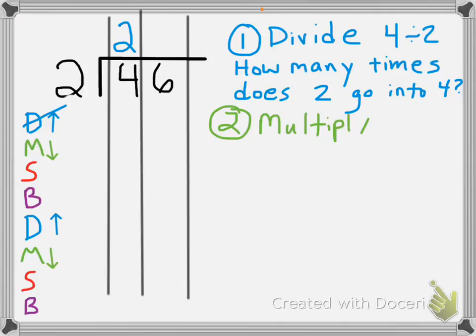Step 2 is multiply. So we're going to do the 2 that we just wrote down, times the 2, the divisor, which is 4. And when you multiply, your answer goes down. So I write it down there, and I cross out my M in my DMSB's.